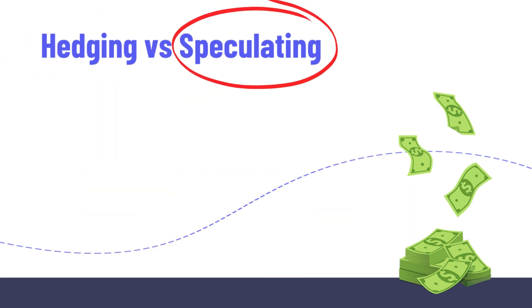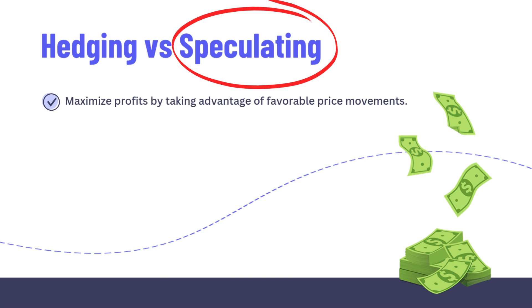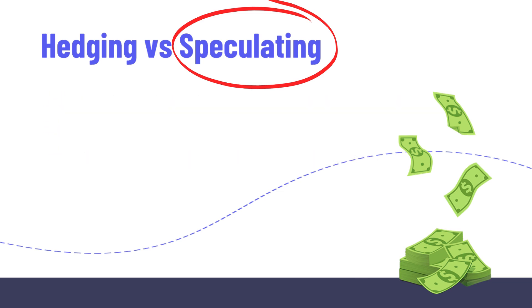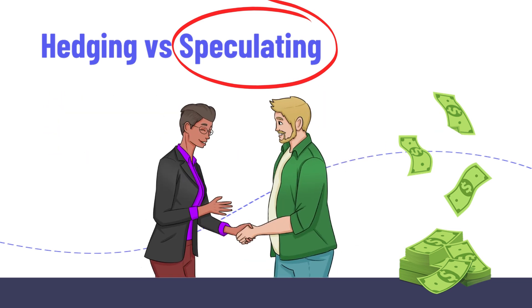Speculating is to maximize profits by taking advantage of favorable price movements. This investing strategy is often used by active traders who have no intention of purchasing or delivering the underlying asset, so they will close their position sometime before the expiration date, hopefully having made a profit.